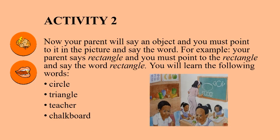Activity 2. Now your parent will say an object and you must point to it in the picture and say the word. For example, your parent says rectangle and you must point to the rectangle and say the word rectangle. You will learn the following words: circle, triangle, teacher, chalkboard.